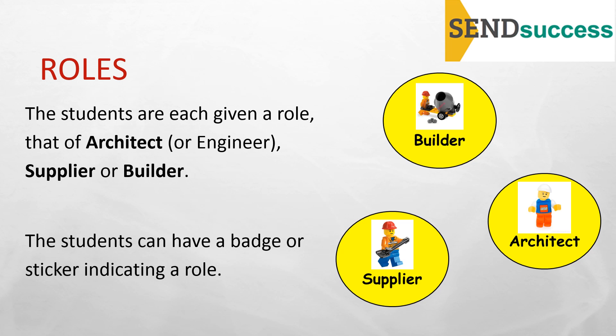The next stage is to talk the students through the different roles they're each going to be assigned. The three roles are that of the architect, sometimes known as the engineer, the supplier, and the builder. Giving the students a badge or a sticker can help reinforce this, as can using props — the architect might be given a clipboard, the supplier a special box for their Lego, and the builder a baseboard and a builder's hat.